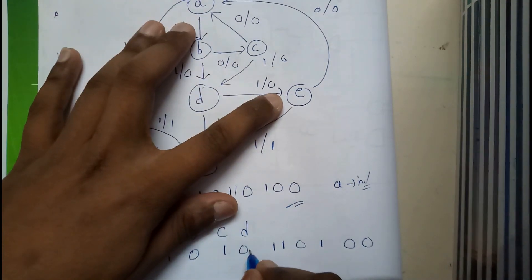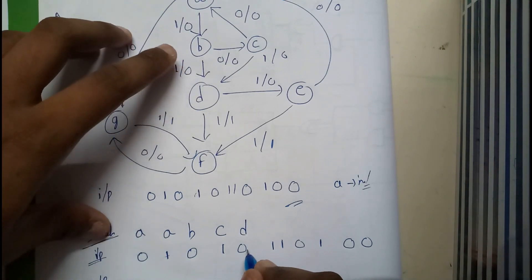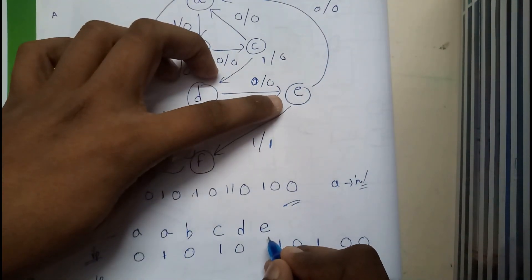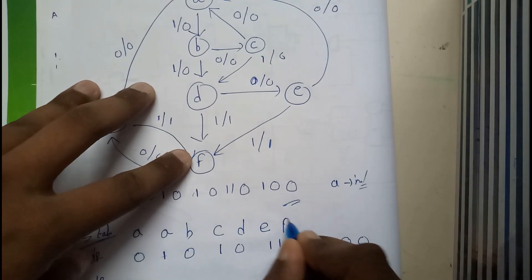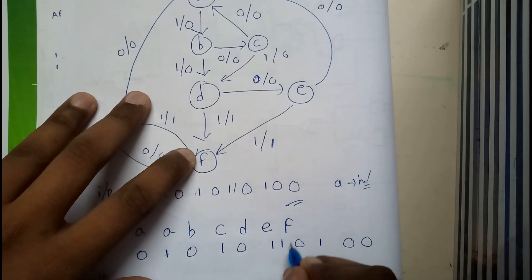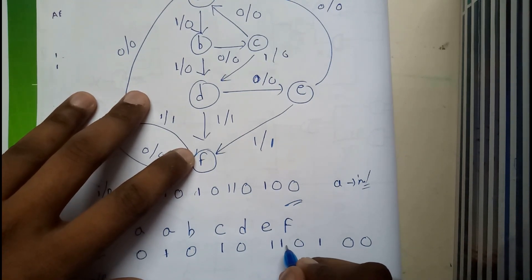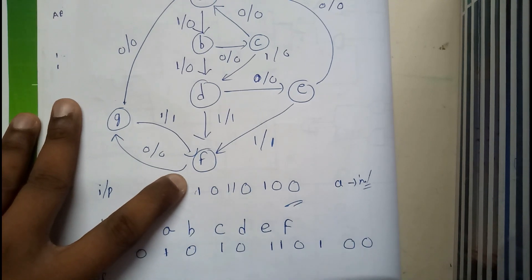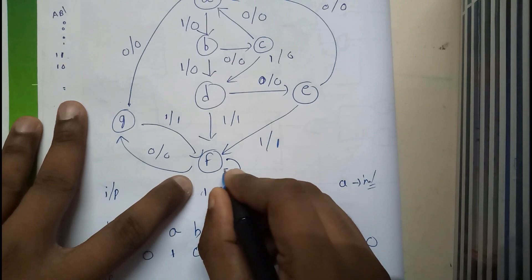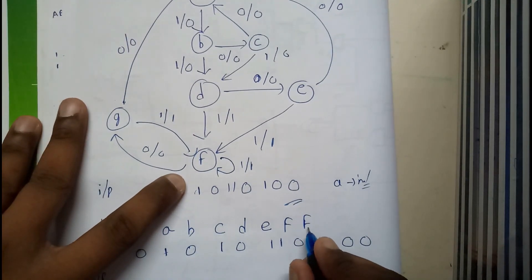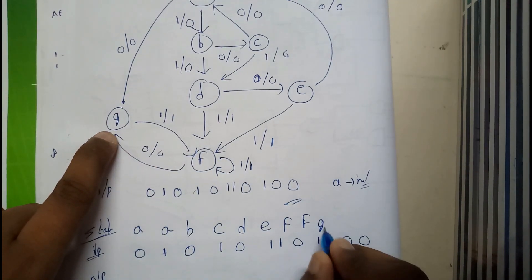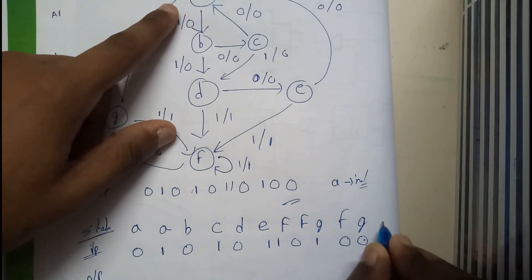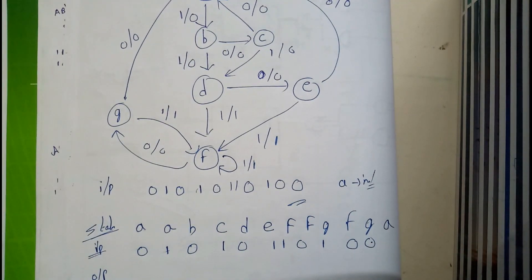For D if you give zero it moves to E. From E if you give one it moves to F. For F if you give one it goes to F itself. For F if you give zero it goes to G. For G if you give one it comes back to F. For G if you give zero we go back to A — completing a full cycle.